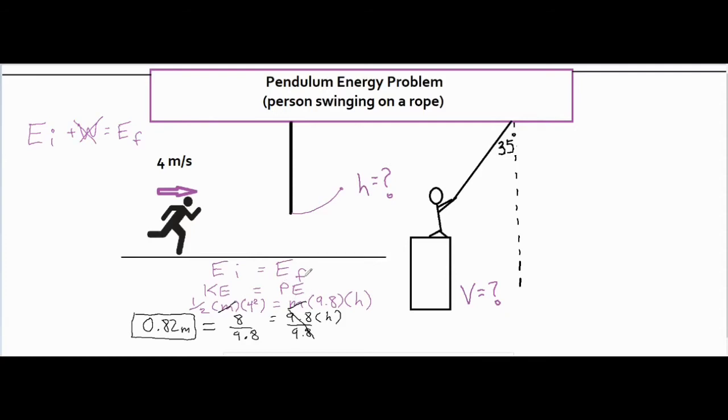And then on the potential energy side, I have mgh. So like I said, m is already canceled out. The g is always 9.8, and then we have our h for the maximum height that the person travels up to. That's just a vertical height straight up from the ground level. So then mathematically, it works out pretty nicely. All I have to do is divide both sides by 9.8, and I'm done. And my maximum height is 0.82 meters.